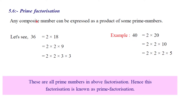Prime Factorization. Any composite number can be expressed as a product of some prime numbers. Suppose I need to show you a composite number of 36. We have already discussed that a composite number has more than 2 factors.